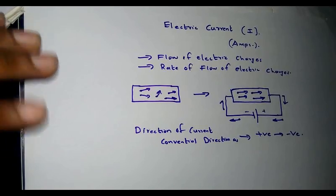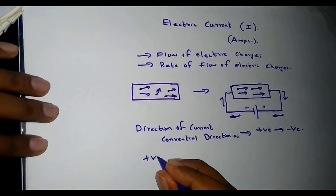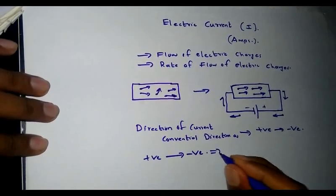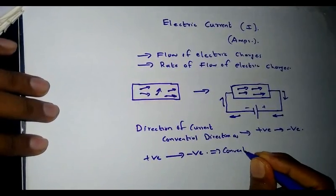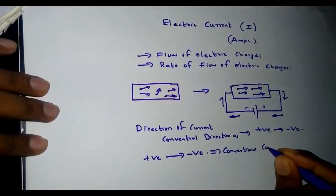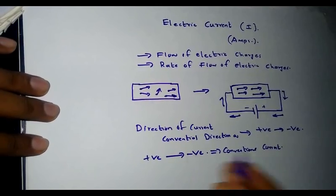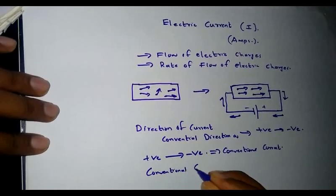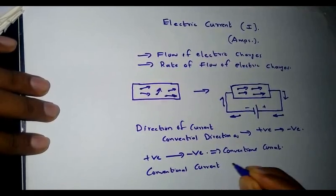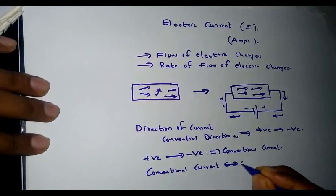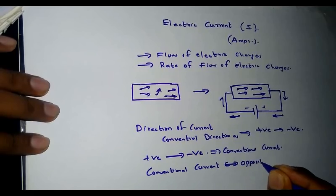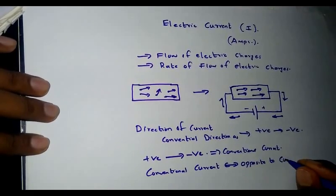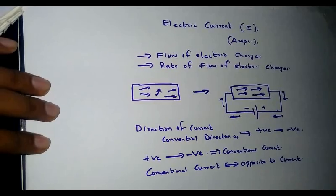The direction of this assumed current — from positive to negative, or from higher potential to lower potential point — is termed as conventional current. The direction of conventional current is opposite to that of the actual current, which is the flow of charges.